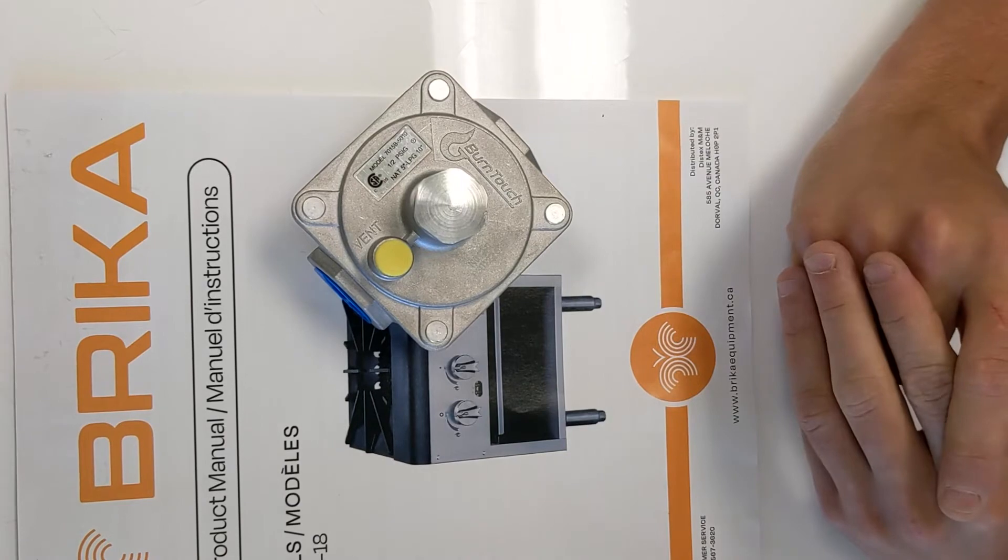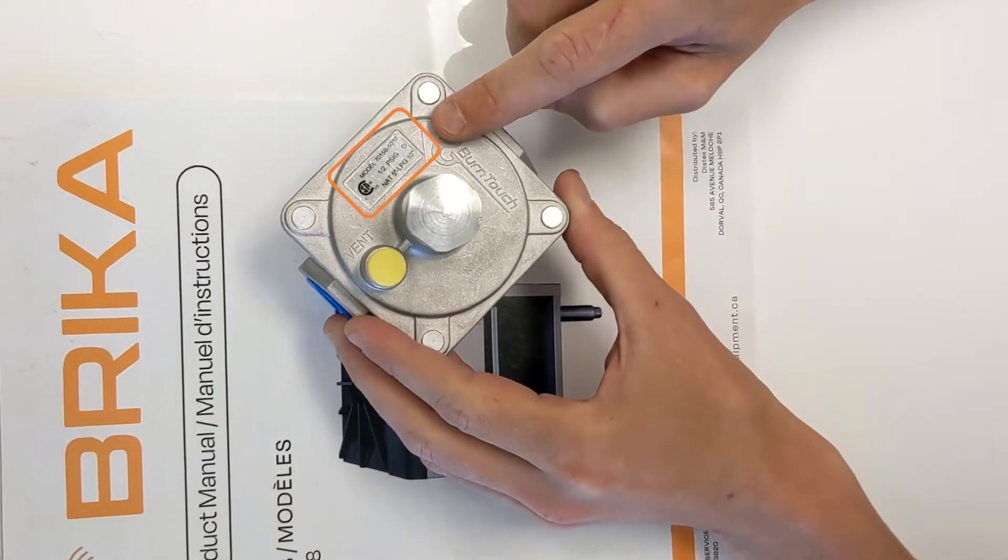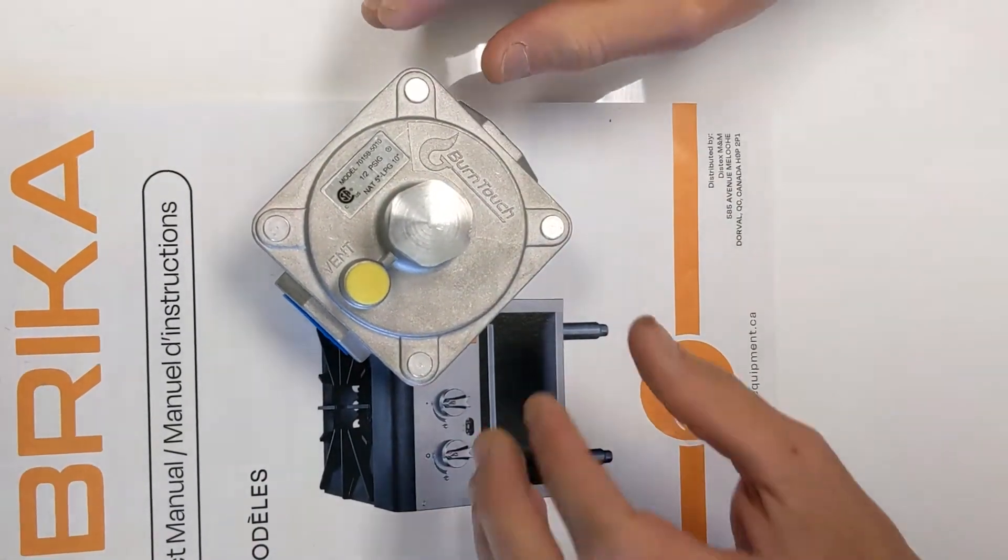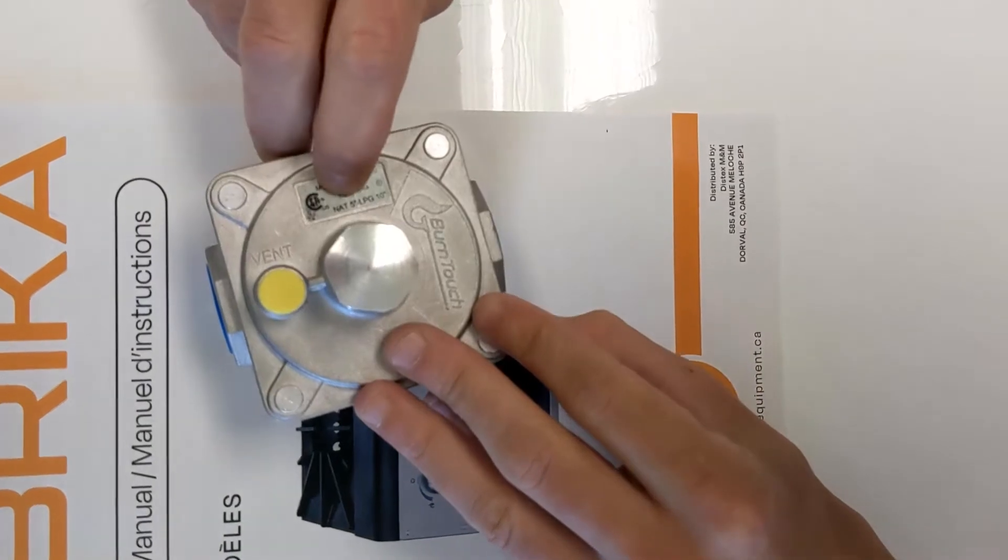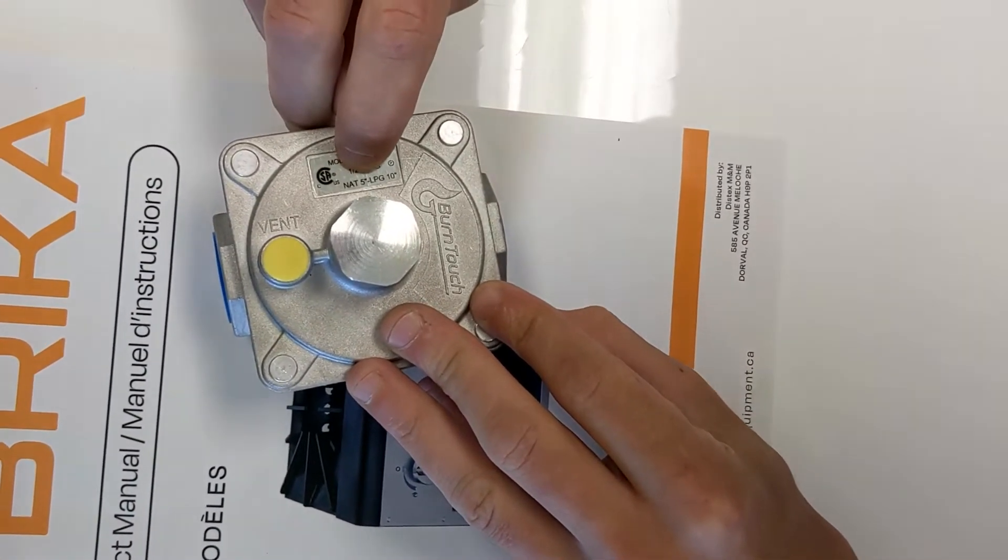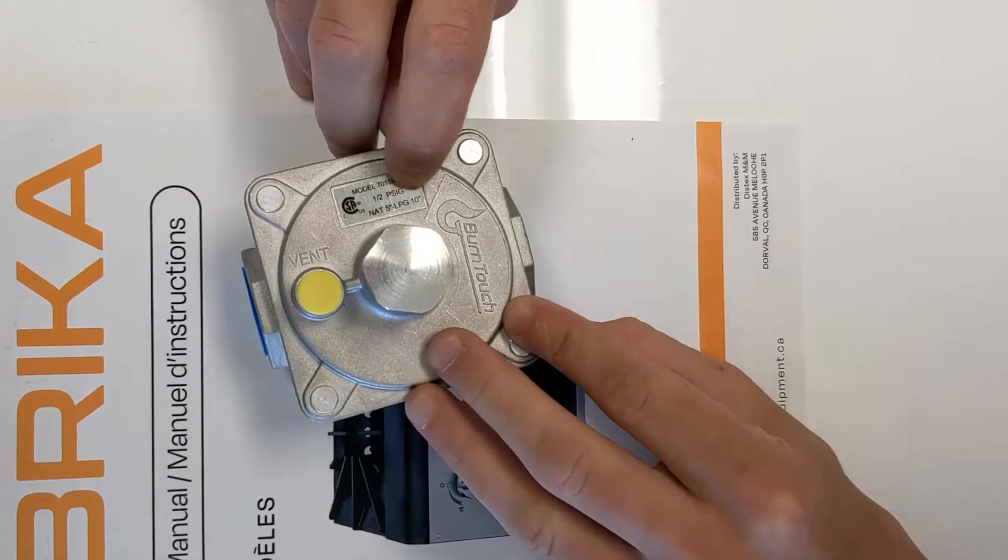But there's only one regulator supplied because our gas regulator is good for natural and propane. As we can see here on the gas regulator, it says natural 5 water columns and LPG 10 water columns.